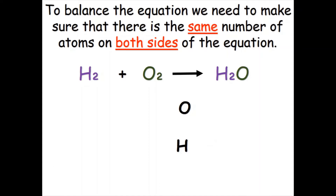What we have to do is count up how many atoms we have on each side for each element involved. On the left-hand side for the reactants we have two oxygen atoms; on the right-hand side for the water we have one. For hydrogen, on the left side we have two hydrogen atoms and on the right side we also have two hydrogen atoms.